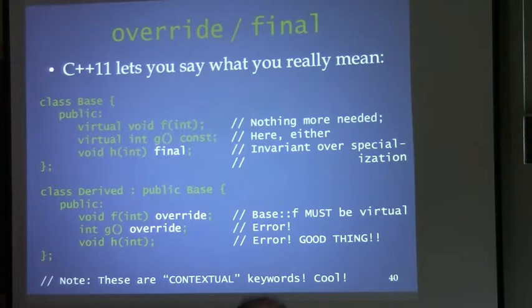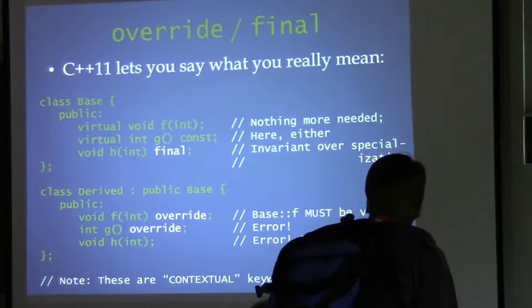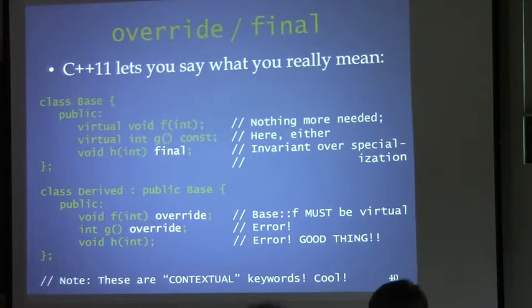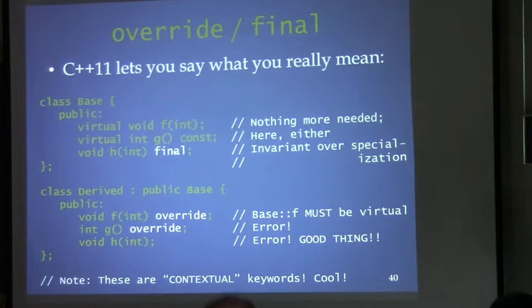`final` and `override` are examples of contextual keywords — they may be the only two. They're keywords that didn't exist in C++98, so there's probably a lot of code out there where `final` is used as a variable or function name. This does not break that code, because these keywords are used in a very specific context. If you use `final` as the name of a variable or function, that's fine too.